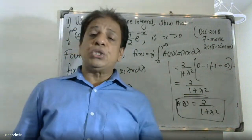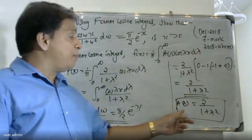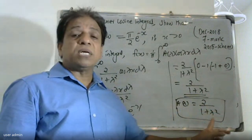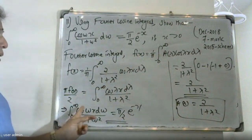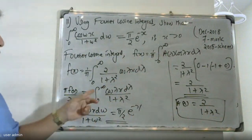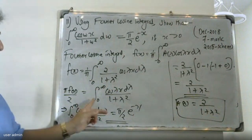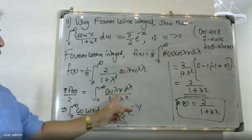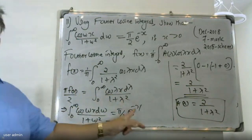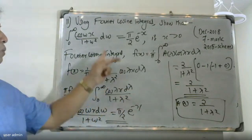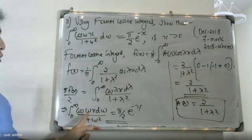Applying the upper limit infinity and lower limit zero, A(λ) = 2/(1 + λ²). Substituting back and replacing λ with ω gives ∫₀^∞ cos(ωx)/(1 + ω²) dω = π/2 · e^(-x).